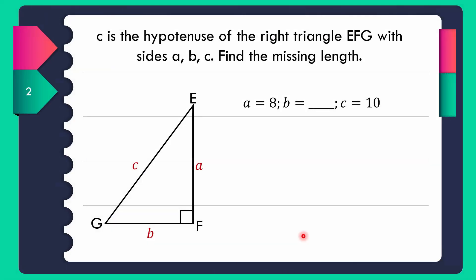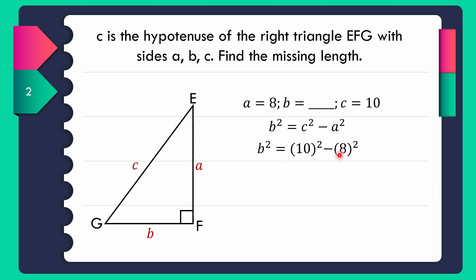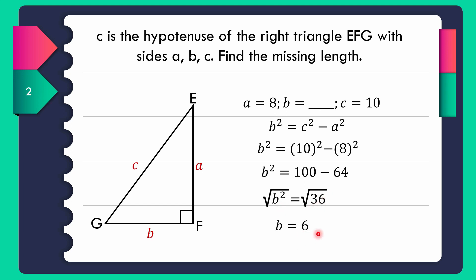For example two, given A equals 8 and C equals 10, we find the length of side B. Since a leg is missing, we use the formula B squared equals C squared minus A squared. Substituting: B squared equals 10 squared minus 8 squared, which equals 100 minus 64, equals 36. Taking the square root of both sides, B equals the square root of 36, which equals 6. The length of side B is 6 units.